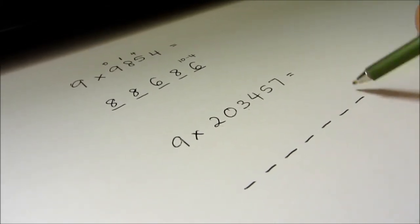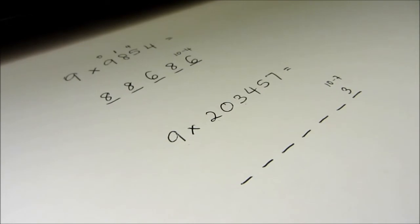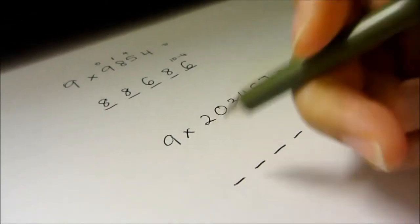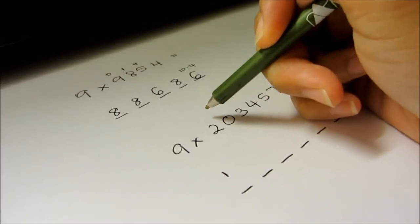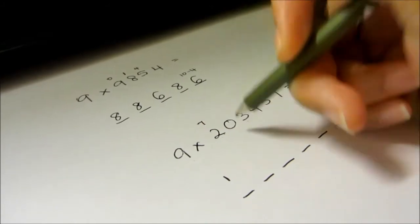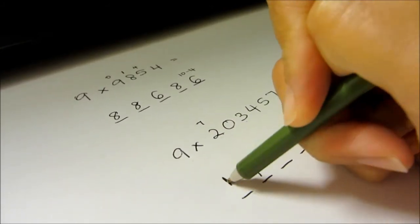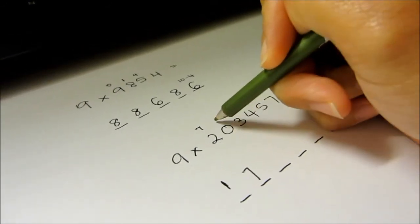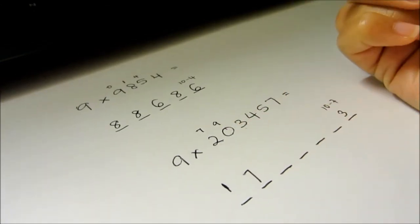The last digit will be 10 minus 7, so it's going to be 3. The first digit is going to be 2 minus 1, so let's put 1 up here first. 9 minus 2 would be 7, so 7 plus 0 will be 7. So this is going to be 1, 7.